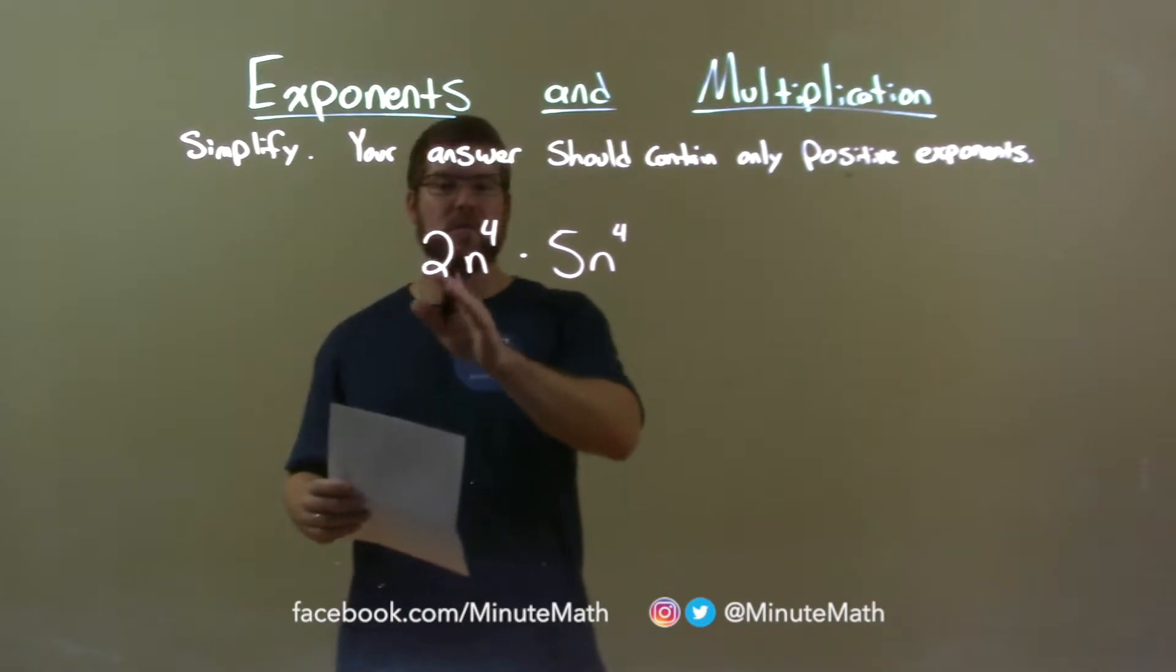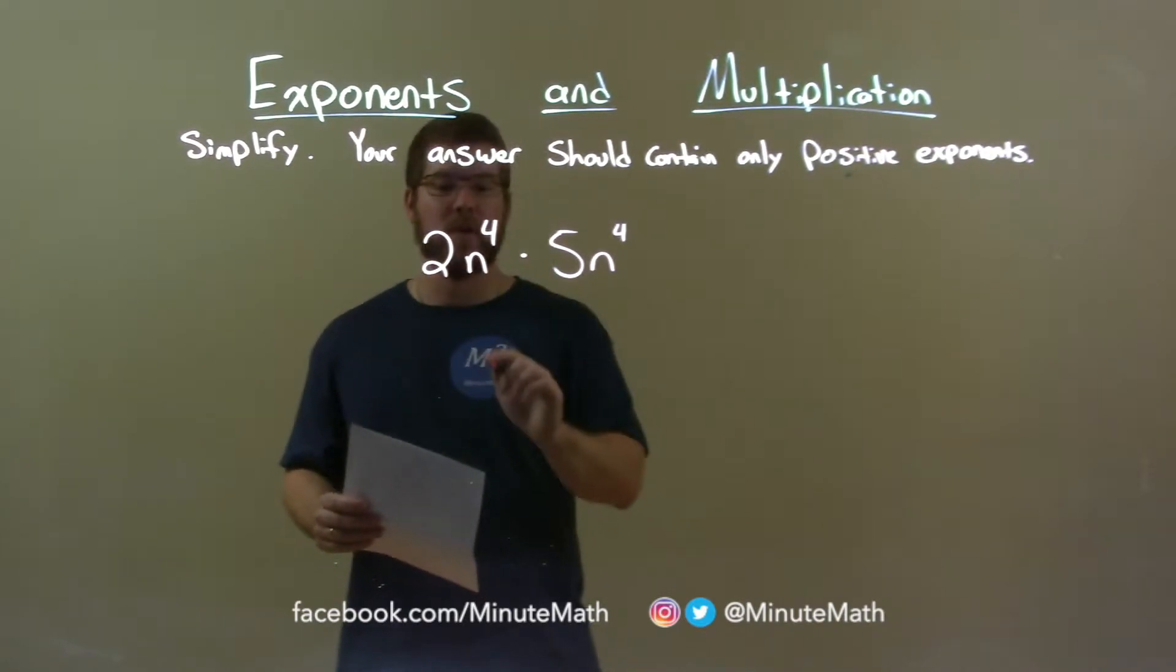So we first look at the coefficients, 2 and 5. That being multiplied, 2 times 5 is 10.